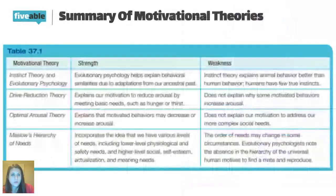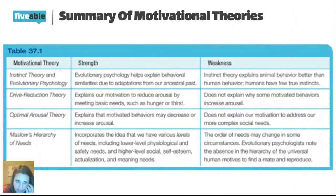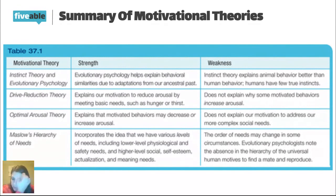The peak of the pyramid includes self-actualization — realizing your fullest potential — and self-transcendence. Not everyone gets there; sometimes you lose your job, become homeless, or a relationship ends, and your sense of belonging is missing. We don't always move upward; sometimes we go down a step and back up. This pyramid explains why we feel a need for belonging, love, self-esteem, and achievement — the 'wishy-washy' motivations without a clear biological mechanism. There's a chart summarizing all four theories in the Myers textbook that's a great study resource.